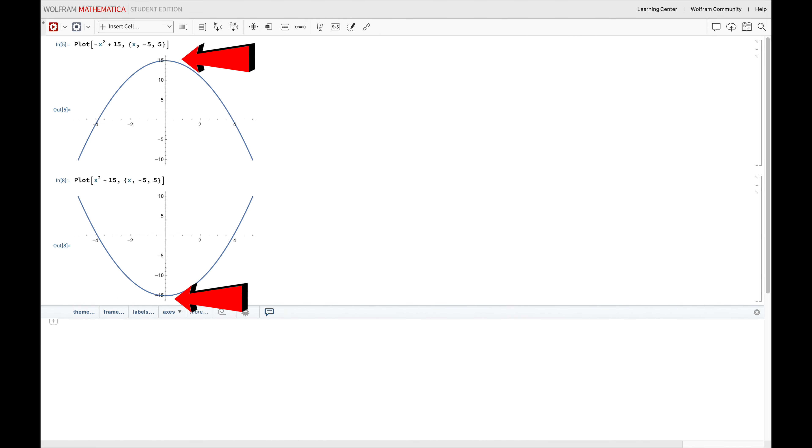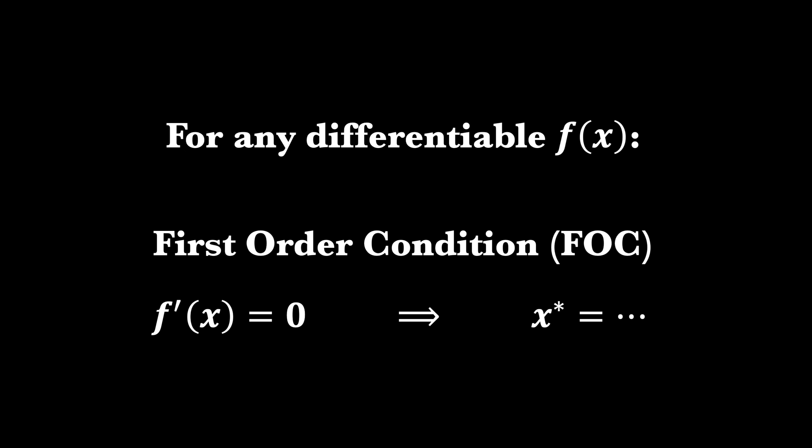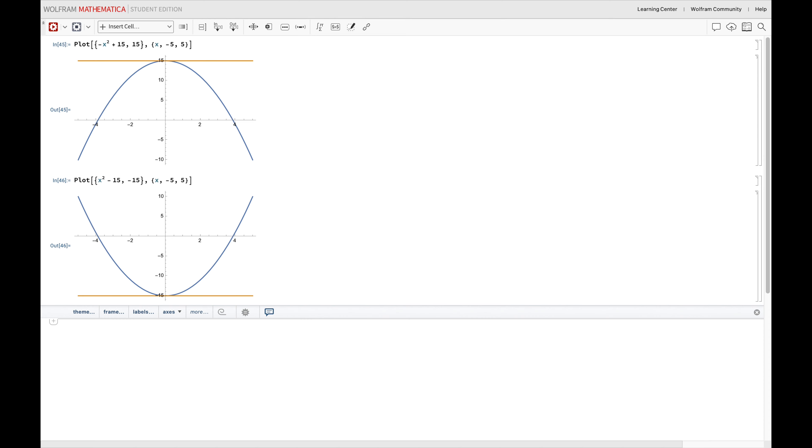To find these critical points, we turn to our first-order conditions, or FOCs as we like to abbreviate them. The FOCs require us to find where the derivative of the function is equal to zero. But why zero, you might ask?